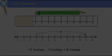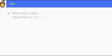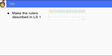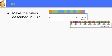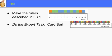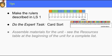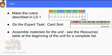When you sit down with your colleagues to preview this unit, I suggest you start by making the rulers described in Lesson Series 1, one with inch tiles and one with centimeter cubes. Then do the expert task together. You might take time now to assemble materials for the unit. See the resources table at the beginning of the unit for a complete list.